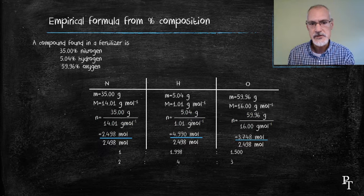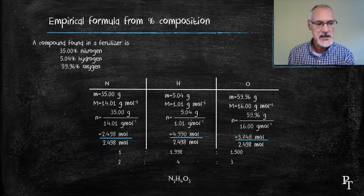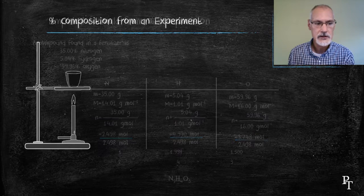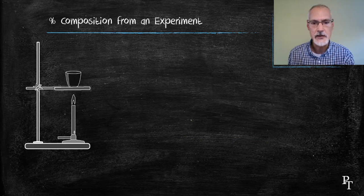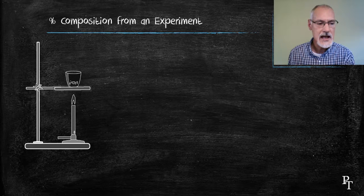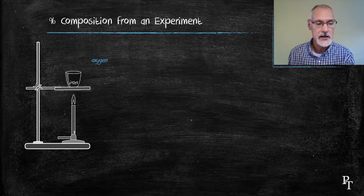Let's take a look at how we can get percent composition now from an experiment. In my experiment here, I'm going to start with a crucible and placed in that crucible will be some iron. I then add heat to the iron by means perhaps of a Bunsen burner. Oxygen then from the air will combine with that iron and it will then produce iron oxide.